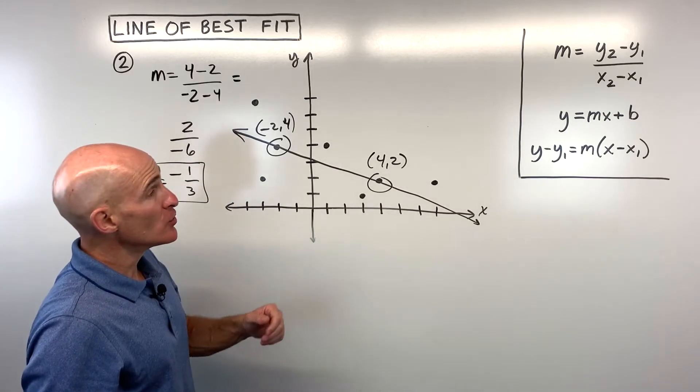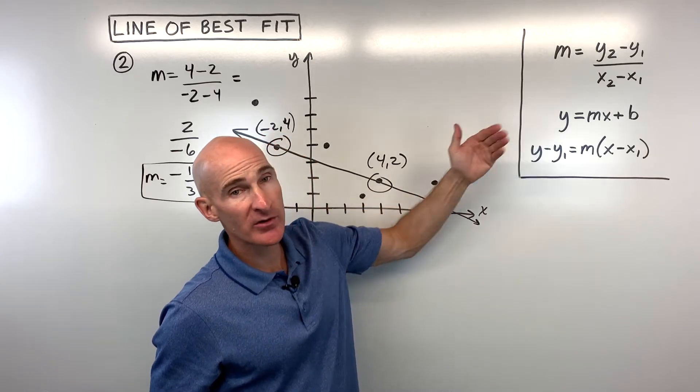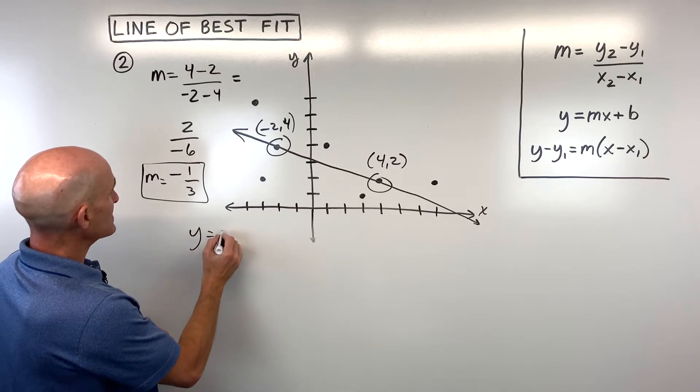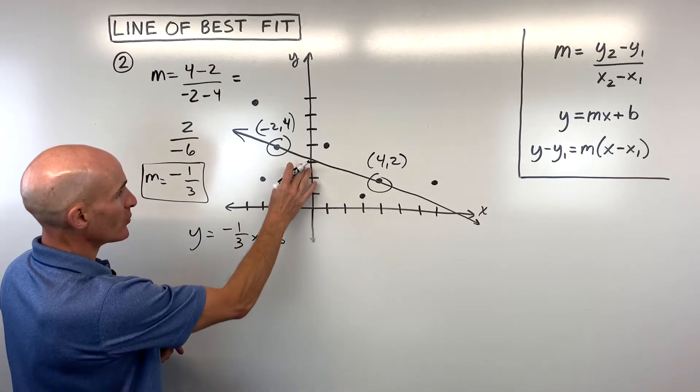Okay, now we can use the slope-intercept form or the point-slope form. I'll show you the slope-intercept form this time, just so you can see another way of doing it.